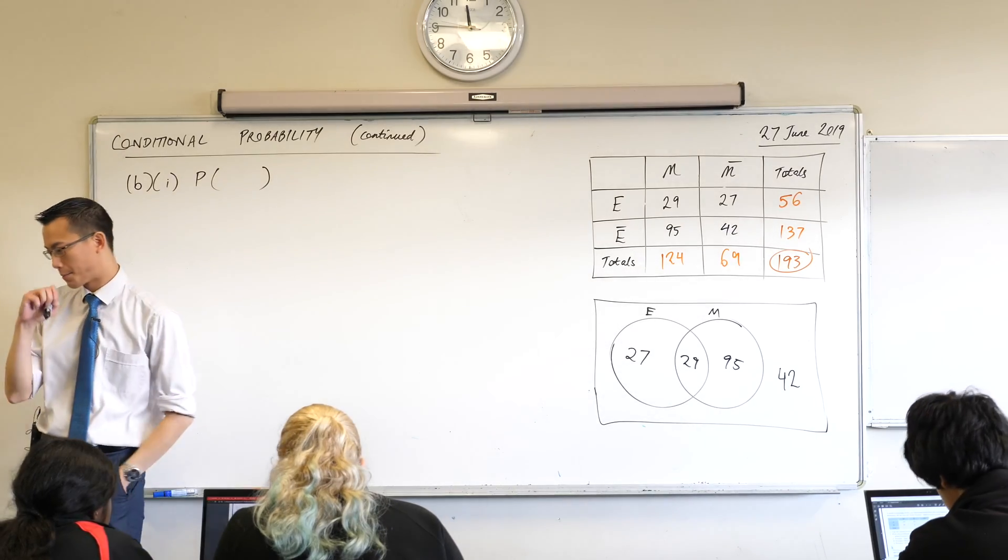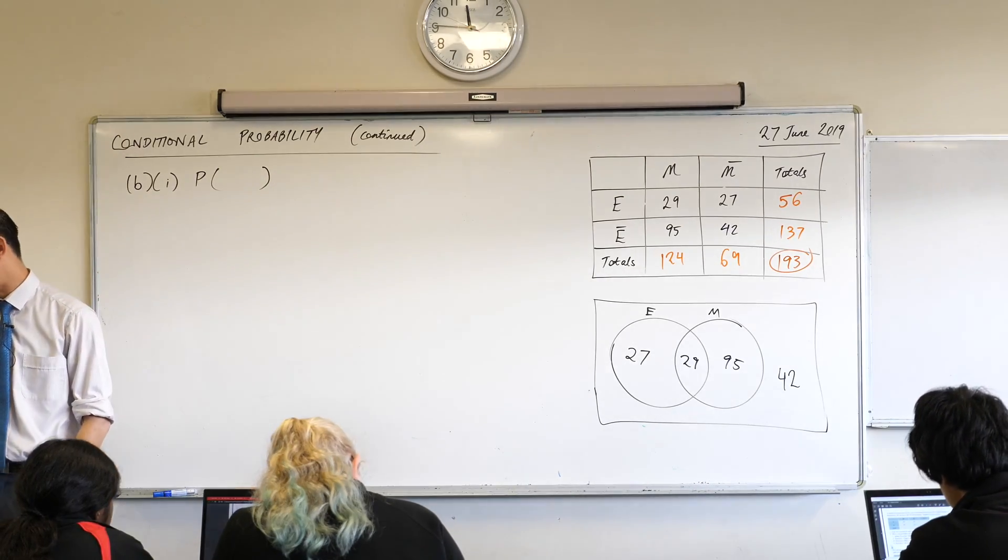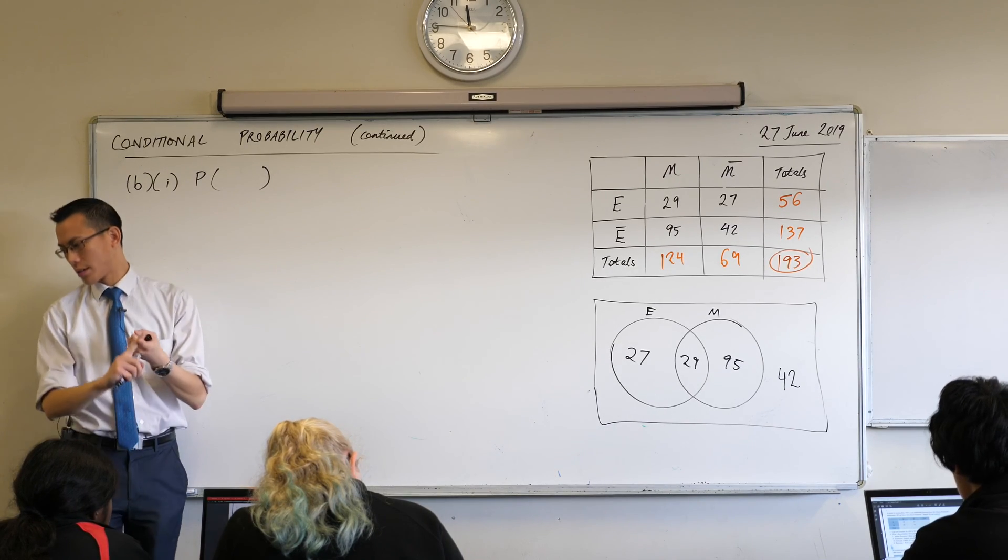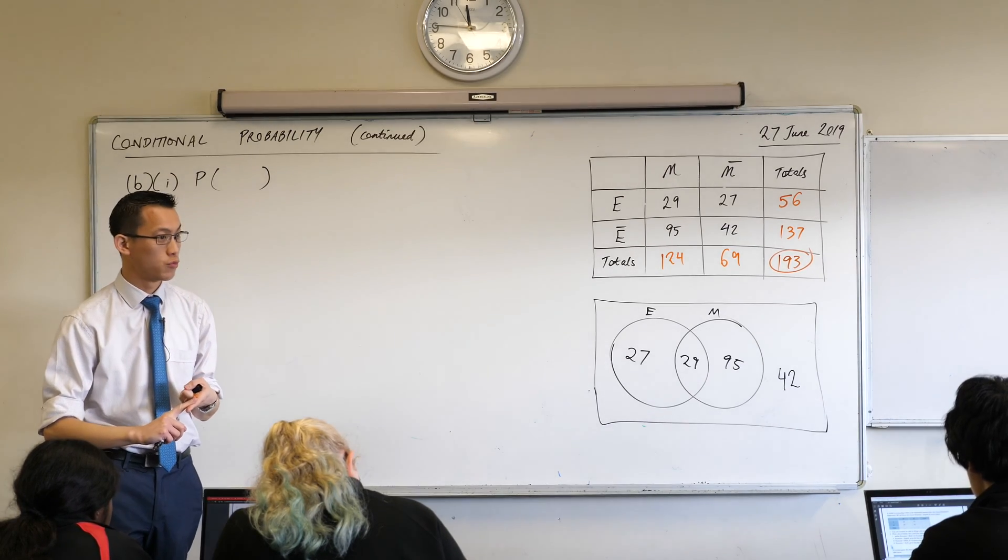Let's have a look at part one. What does it ask? What's the probability that a particular student chose neither extension 1 maths nor extension 1 English?